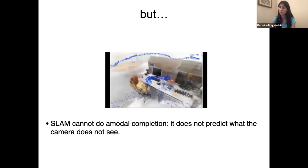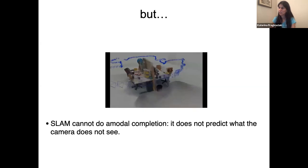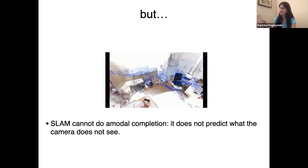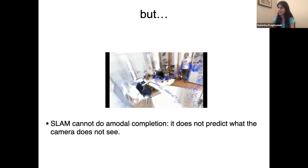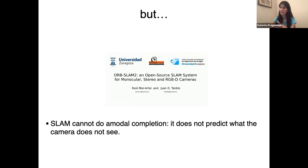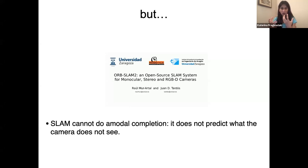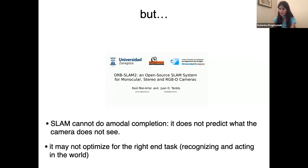What SLAM cannot do that humans and animals can is model completion — SLAM cannot predict what the camera cannot see. In this office scene, the camera has literally been everywhere to make the dense map. If you go to thousands of office scenes, you'll never be able to associate a 2D view with the full 3D map. SLAM just moves the camera around, but humans, after moving around when young, can open their eyes, see a single view, and understand what's happening — imagining what's behind occlusions.